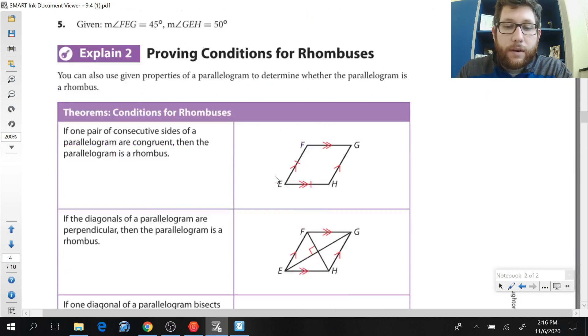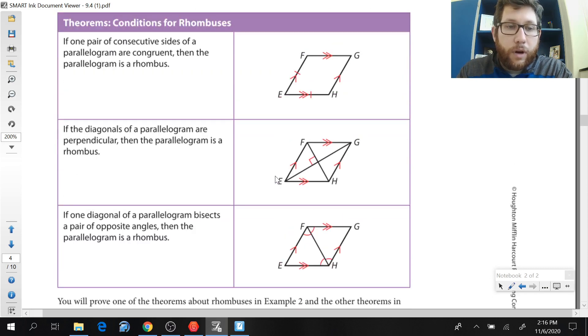Now our rhombus theorems are maybe a little bit more complicated. The first one's pretty easy. If I have two congruent consecutive, that means next to each other, two congruent consecutive sides in a parallelogram, that's going to have to be a rhombus. And we know opposite sides are congruent, right? So FG needs to match EH, and then EF has to match GH. Opposite sides are congruent, and there we have a rhombus. That's pretty easy.